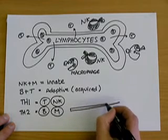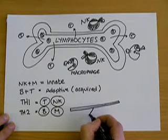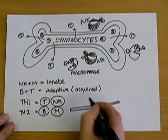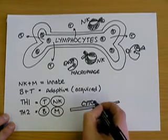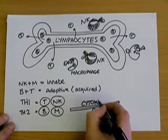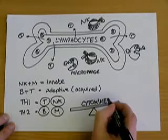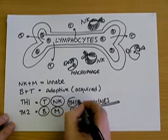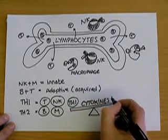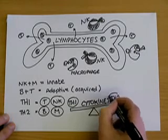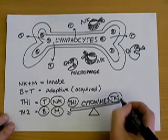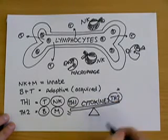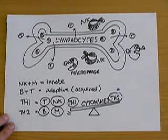Stress can directly impact the level of cytokines by raising them. By raising the level of cytokines, we shift the balance between Th1 and Th2 responses, pushing it towards Th2. By reducing the Th1 balance of T lymphocytes and natural killer cells, we increase our risk of direct infection. This is how stress might make us more susceptible to illness.